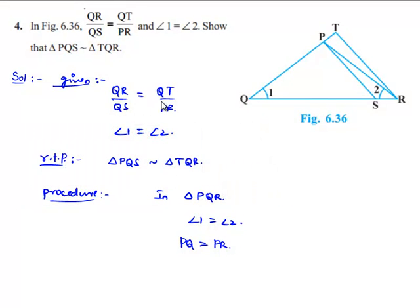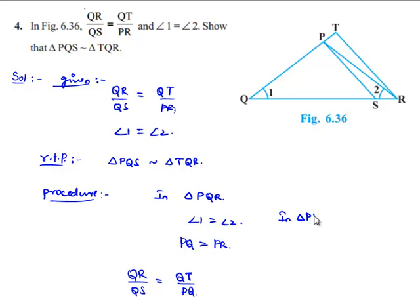So let us replace PR with PQ in the proportionality. Then QR by QS is equal to QT by PR becomes QR by QS is equal to QT by PQ. Comparing this in triangle PQS and triangle TQR, this can be written as PQ by QS is equal to QT by QR.